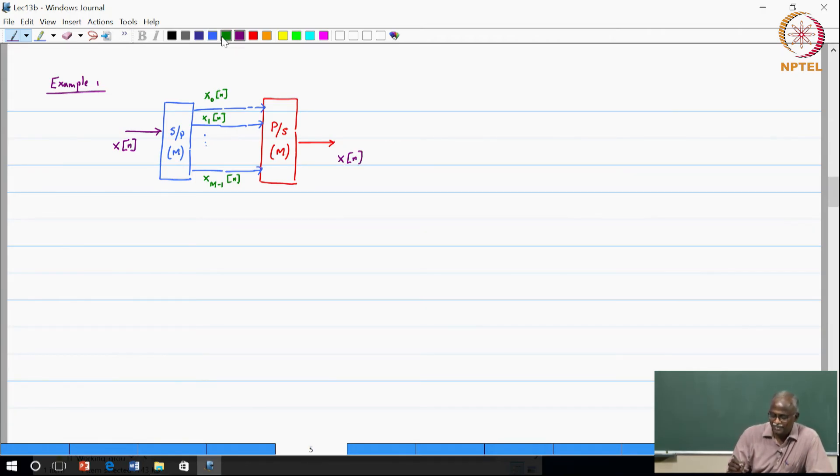So I have M signals coming in. I will label them as X0 of N, X1 of N, XM minus 1 of N. So just before I do that, so that means this whole block effectively was equivalent to a gain of 1. Basically you got input N output X of N, which means that whatever was inside, if you treated as a black box inside, if you treated as a black box, it actually was giving you unity gain.